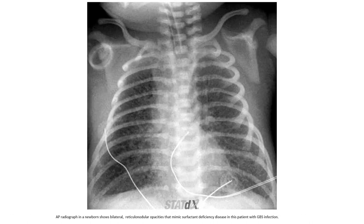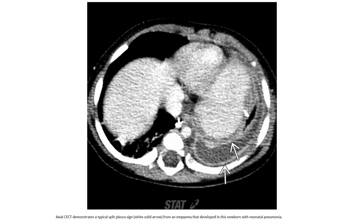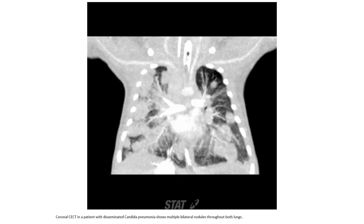Another case — newborn chest. Bilateral reticular nodular opacities mimicking surfactant deficiency disease in a patient with group B strep infection. Contrast CT shows split pleural sign from an empyema that developed in this neonate with neonatal pneumonia. And again, contrast CT in a patient with disseminated candidiasis pneumonia — multiple bilateral nodular opacities throughout both lungs.